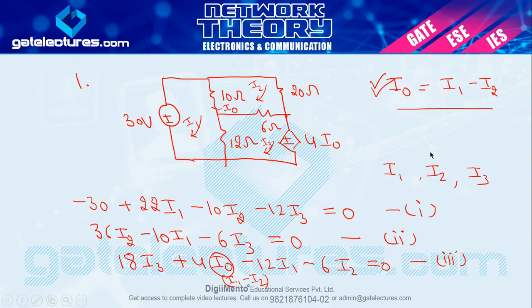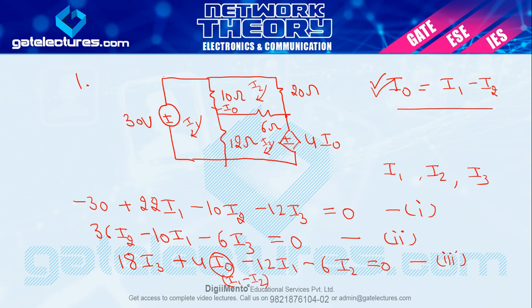यह हमारी mesh analysis की basic approach थी जो मैं repeat कर रहा हूँ। इन approaches को बार-बार सीखना है क्योंकि network theory में आगे two-port network, theorems, transient — सब जगह mesh, nodal, KCL, KVL ही apply करना है। Analog circuit में भी KVL, KCL ही apply होता है। शुरुवात में इन चीज़ों को बहुत अच्छे से time देना चाहिए।